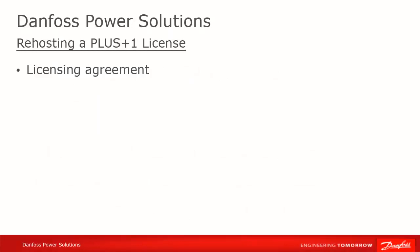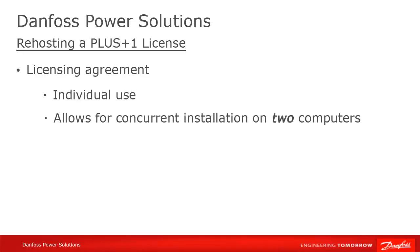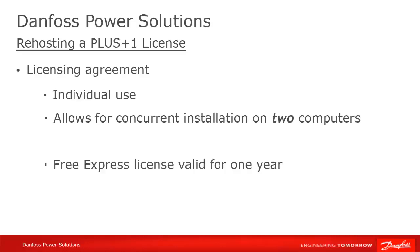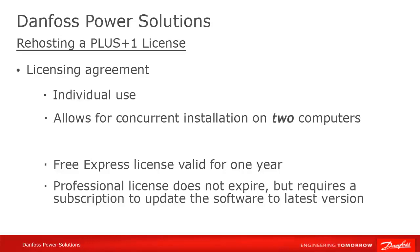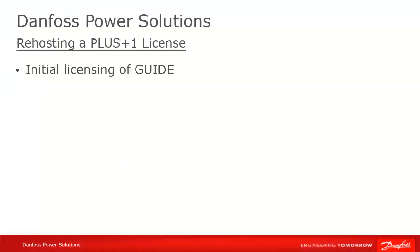First, let's briefly review your licensing agreement. Your licensing agreement is tied to an individual, and that individual can install and use Guide concurrently on two computers. As a reminder, the free Express license is valid for one year, after which it can be renewed by installing the latest version of Guide. The Professional license never expires, but you need a subscription to update to the latest version of Guide. You'll always start by installing Unlicensed Guide on your computer.